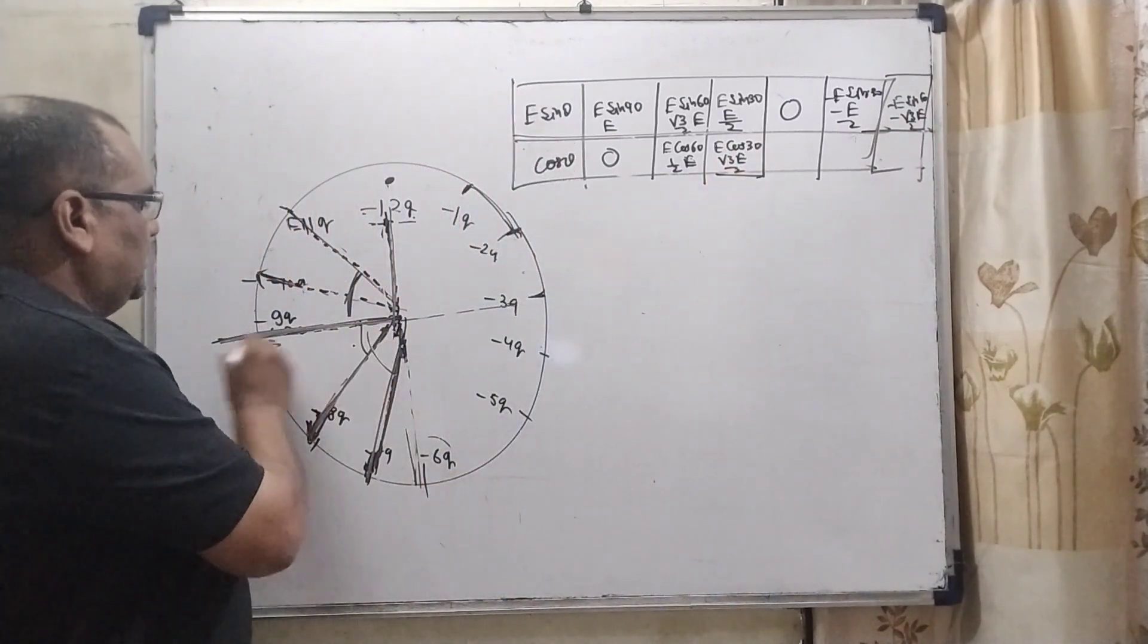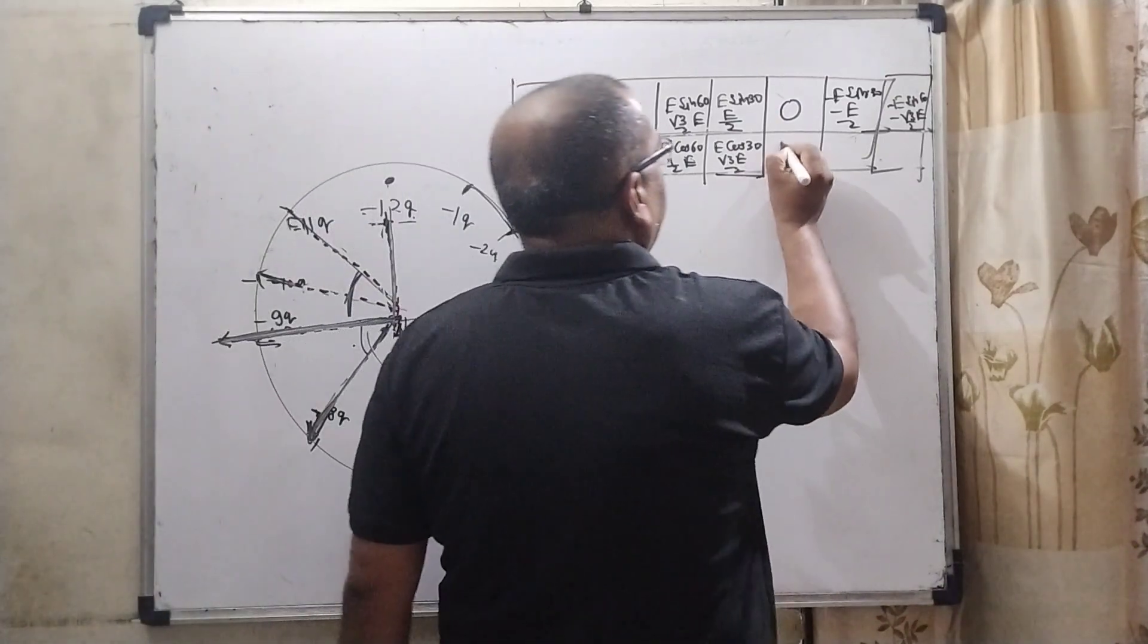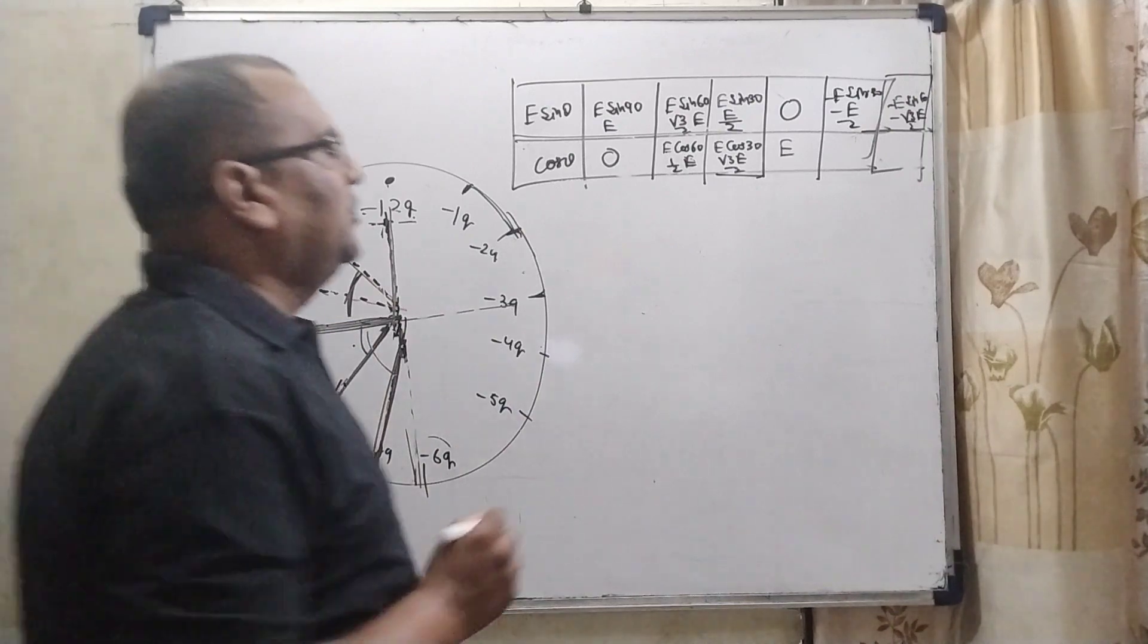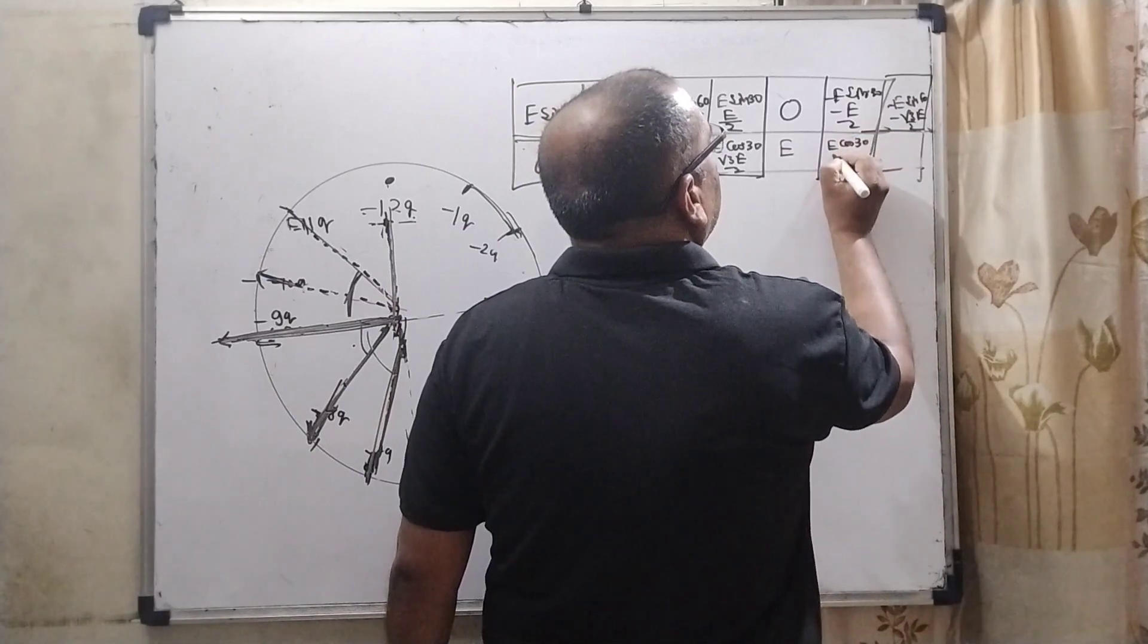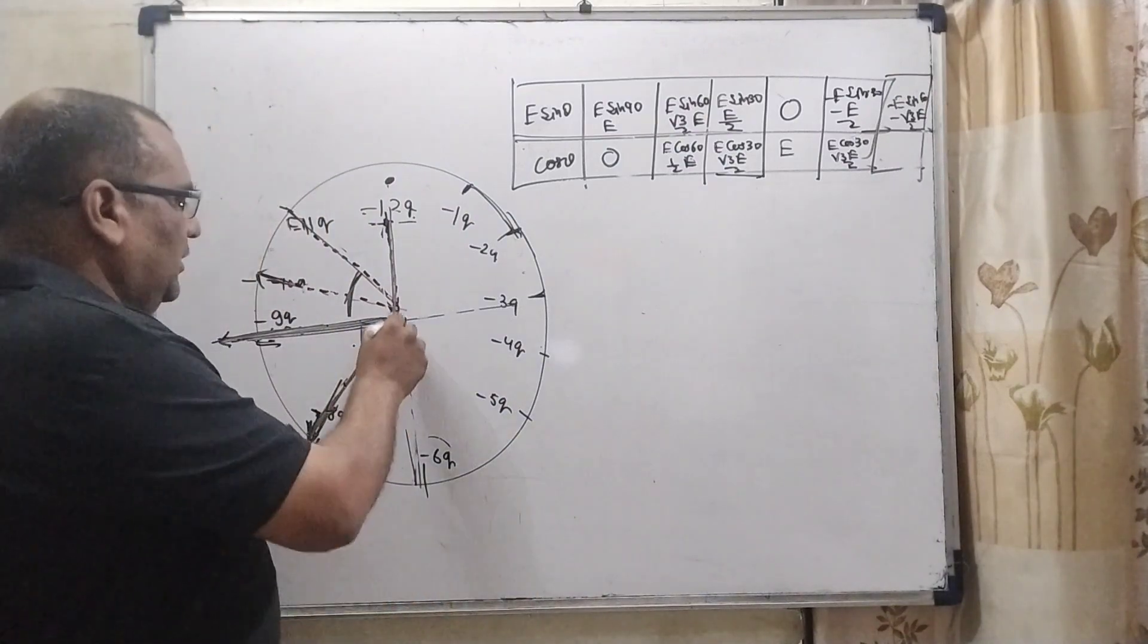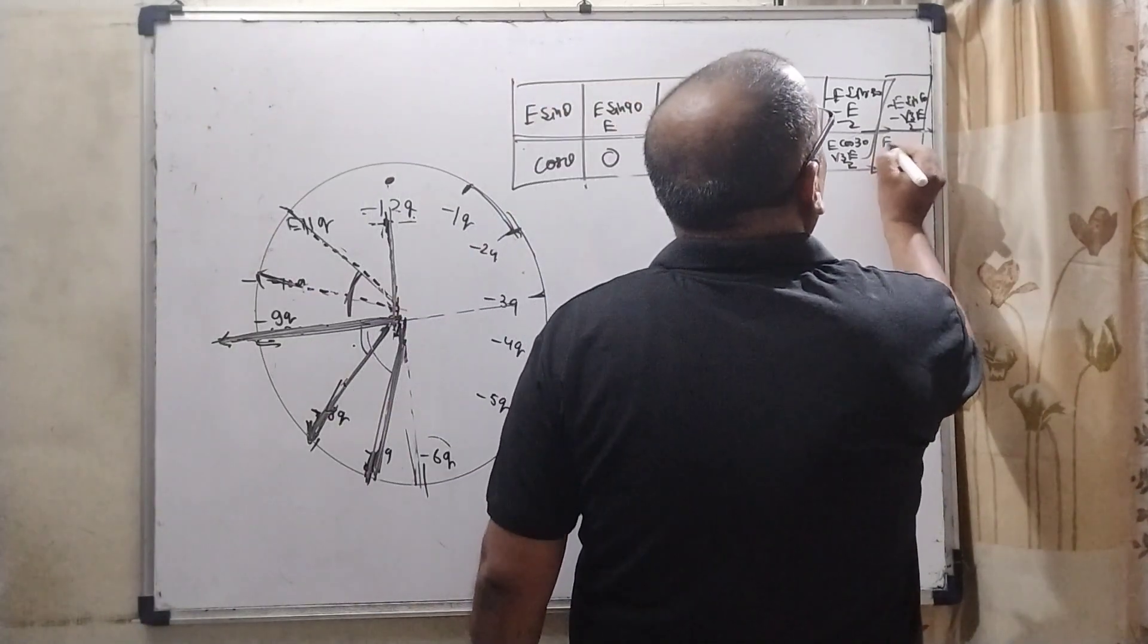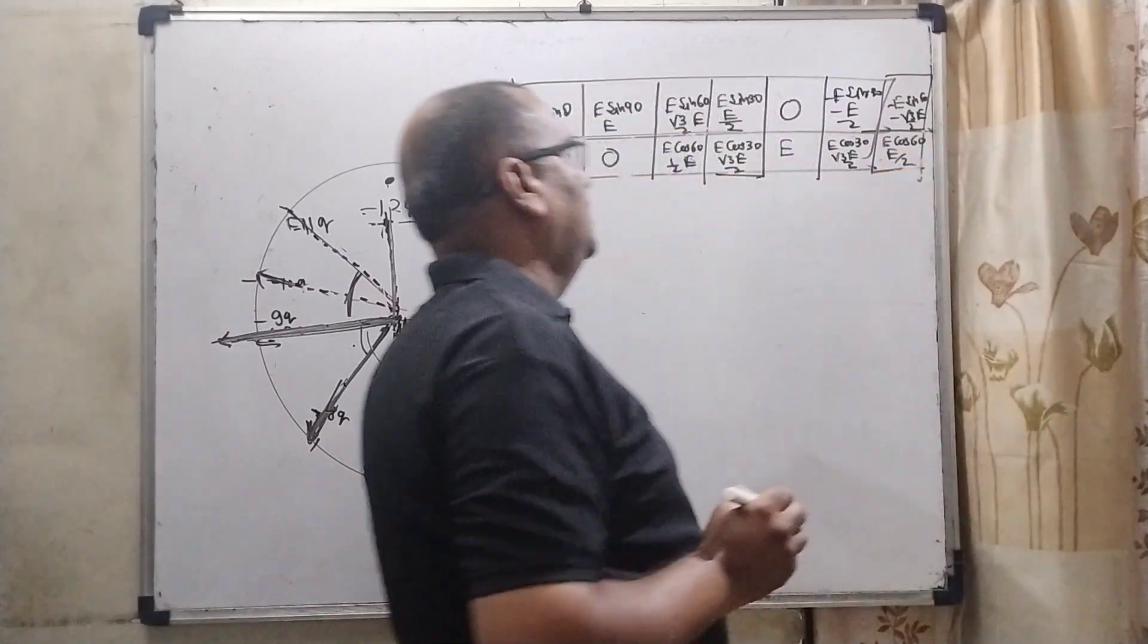And this value is total component, base component. So therefore here cosine 0, it means E. Now this component of cosine component is the same direction of this baseline. So therefore E cosine again 30, so here root 3 E by 2. And here this last component, that is E cosine 60, that is again E by 2.